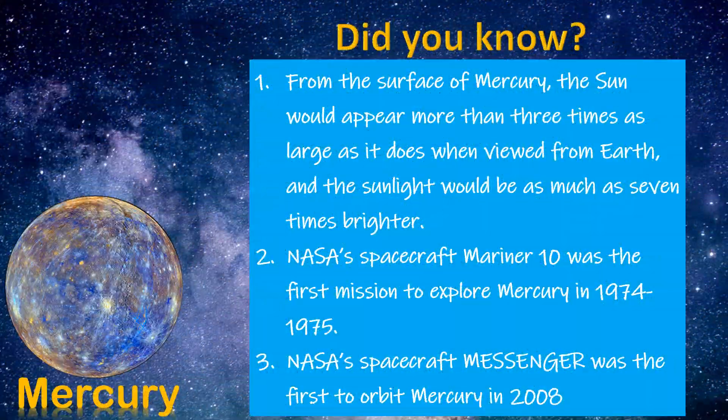From the surface of Mercury, the sun would appear more than three times as large as it does when viewed from Earth, and the sunlight would be as much as seven times brighter. NASA spacecraft Mariner 10 was the first mission to explore Mercury in 1974–75. NASA spacecraft Messenger was the first to orbit Mercury in 2008.